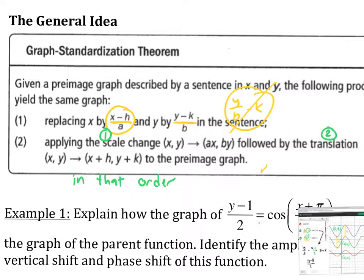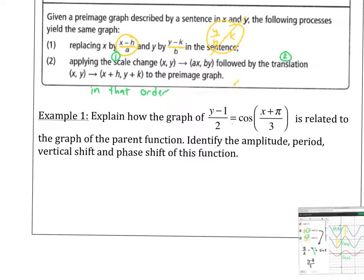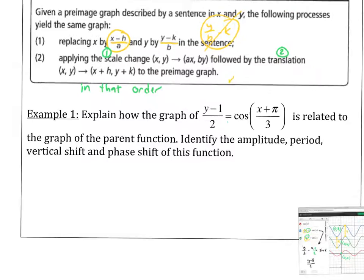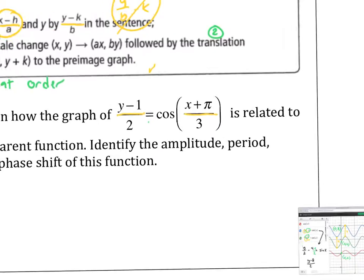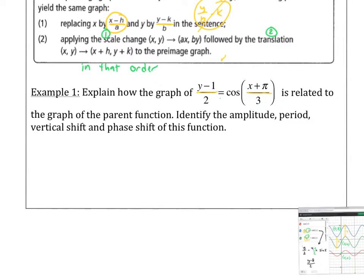So order is important here. So the scale change being whatever A is right here, it multiplies the X, and whatever B is here, it multiplies the Y. And then this is my horizontal shift and my vertical shift. In example one, we're going to explain how this function here is related to the parent function, the graph. So this one says (Y - 1) / 2 equals the cosine of (X + π/3). So what's nice is my form is good. It has the large vinculum there, the large vinculum. So this is a straightforward interpretation.